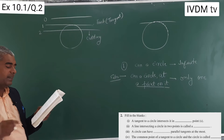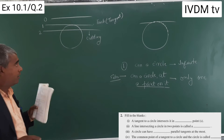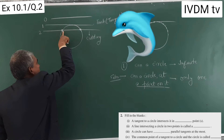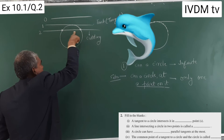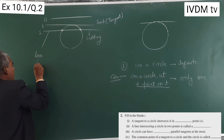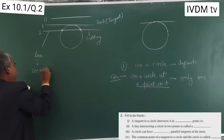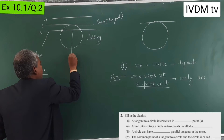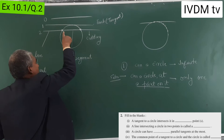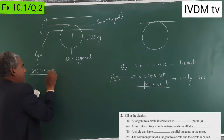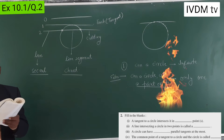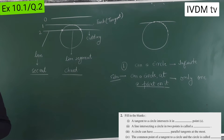A line intersecting a circle in two points is called a secant line. This line is cutting at two points. This whole line will be called a secant. But this line segment — a line segment whose end points are on the circle — this is called a chord. So a line intersecting a circle in two points is called a secant, and the line segment is called a chord.